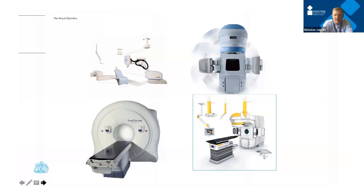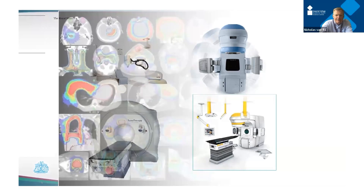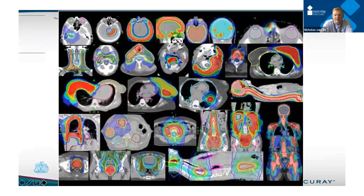These are just some examples of more modern radiotherapy machines. The top left is a CyberKnife, which is robotically mounted. Top right is a TrueBeam, a conventional linear accelerator. The ring is a tomotherapy or Radixact machine, and the bottom is a linear accelerator with a different form of image tracking. These technologies allow us to be far more accurate and conformal in targeting the tumor.